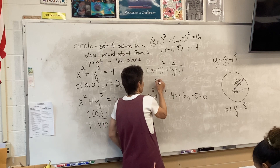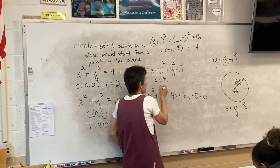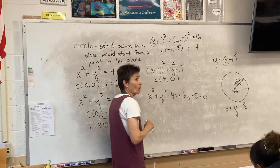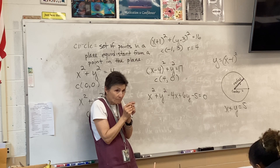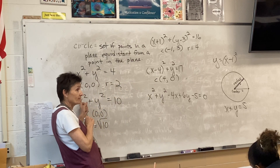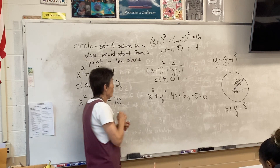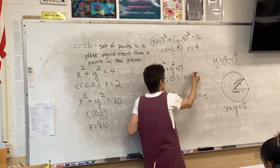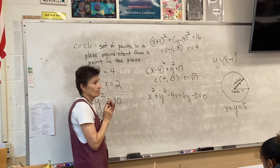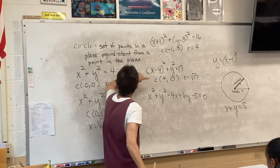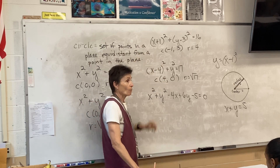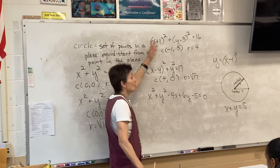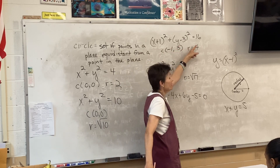What about this one? Where's the center? Positive 4 and 0. Why is it 0? Because there's nothing added or subtracted to the y term — just like when there was nothing added or subtracted, that coordinate is 0. So the center is positive 4, comma 0. These equations are in standard form. That's what you want the equation of a circle to look like, because if it looks like this, you know everything: center, radius — done.